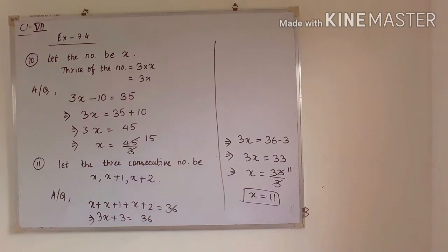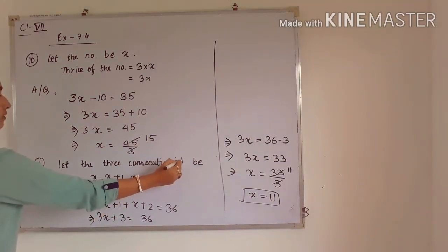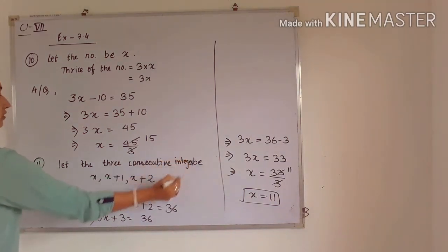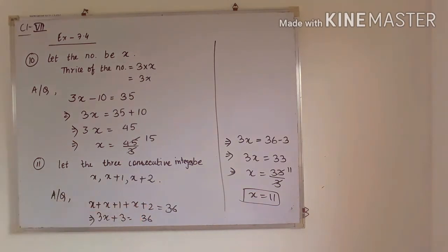Next is question number 11. It is given that if you add 3 consecutive numbers, the answer will be 36. What are these 3 integers? Let the 3 consecutive integers be x, x plus 1, and x plus 2. According to the question, the addition of the 3 numbers will be equal to 36. So 3x plus 3 equals 36, and after solving, we will get x equal to 11.